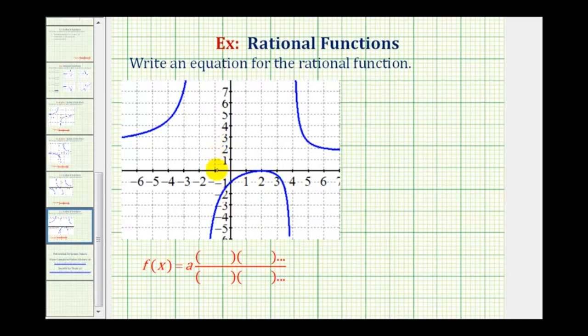We want to start by determining the key components of a rational function. For example, looking at the intercepts, notice how we have an x-intercept here of positive 2, this would be the point (2,0).